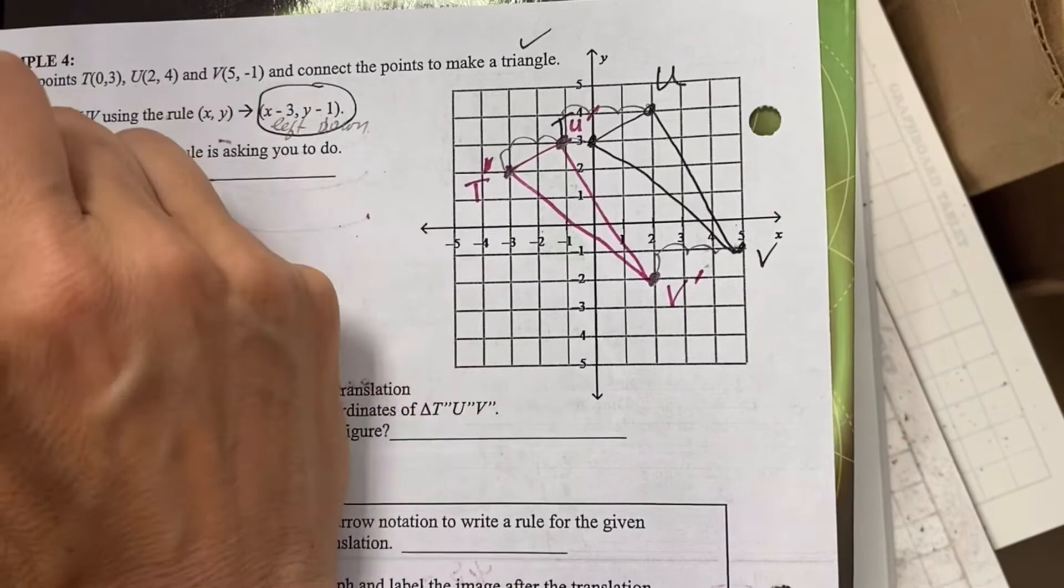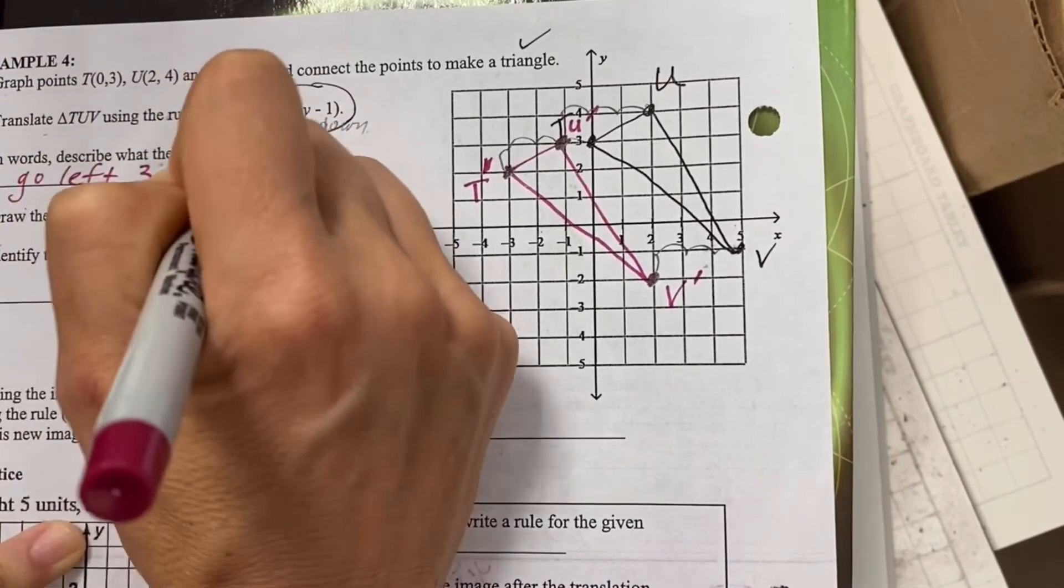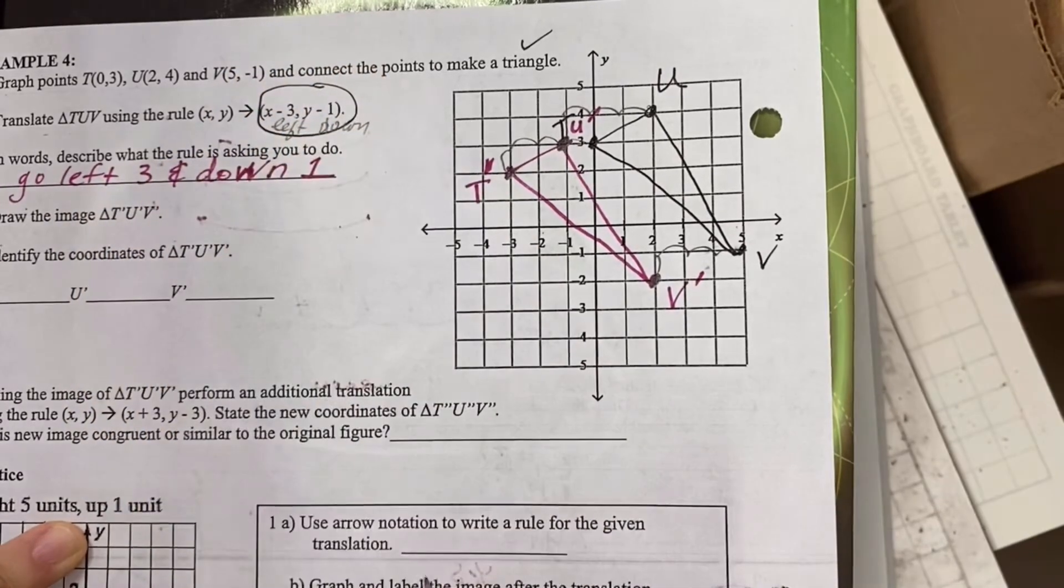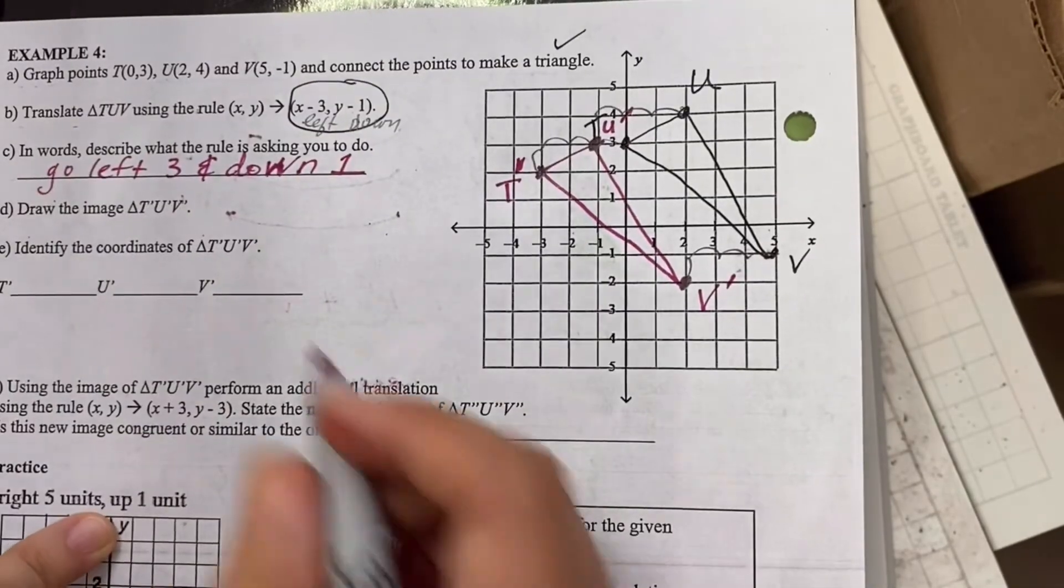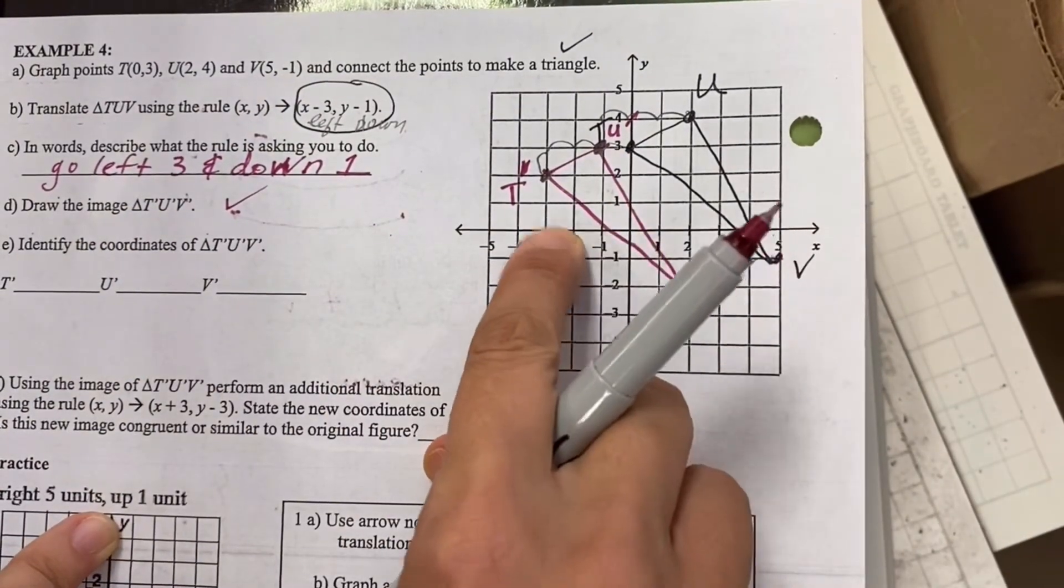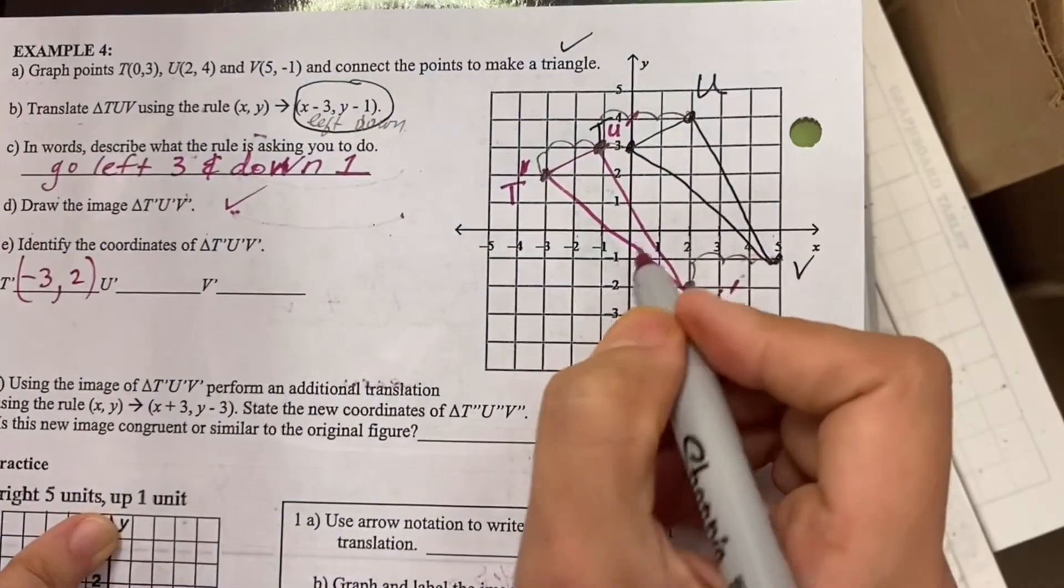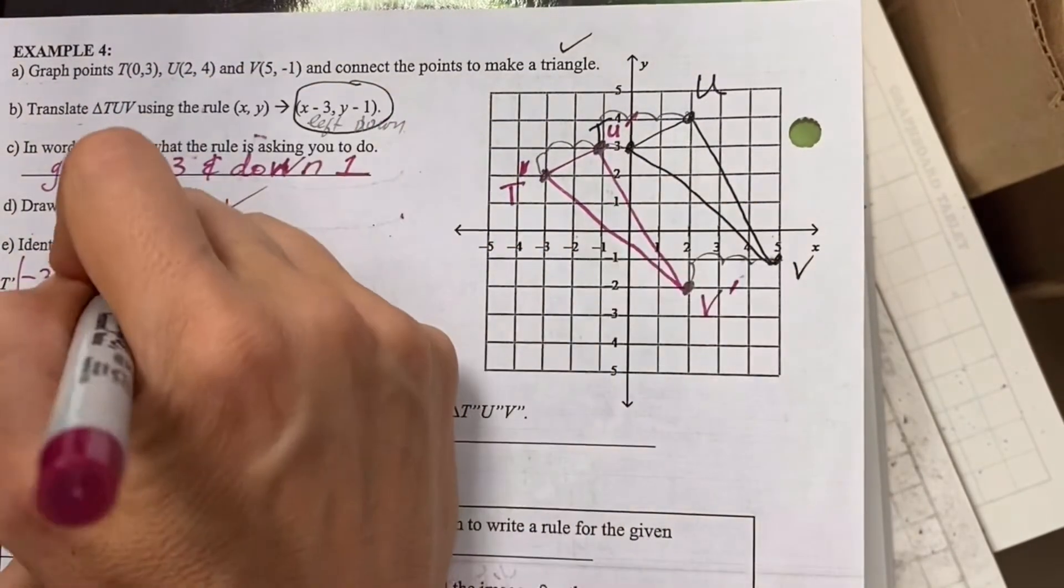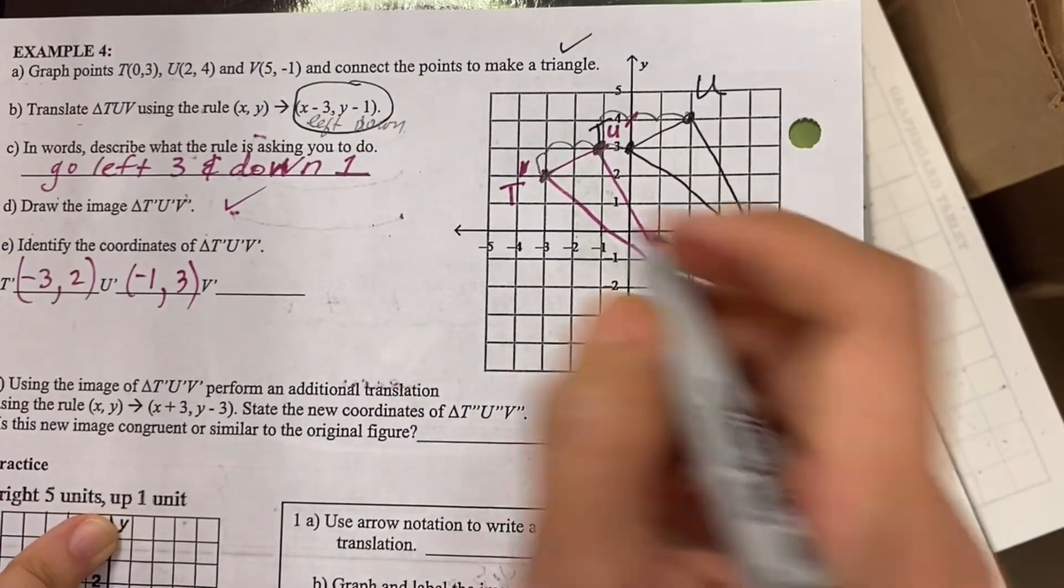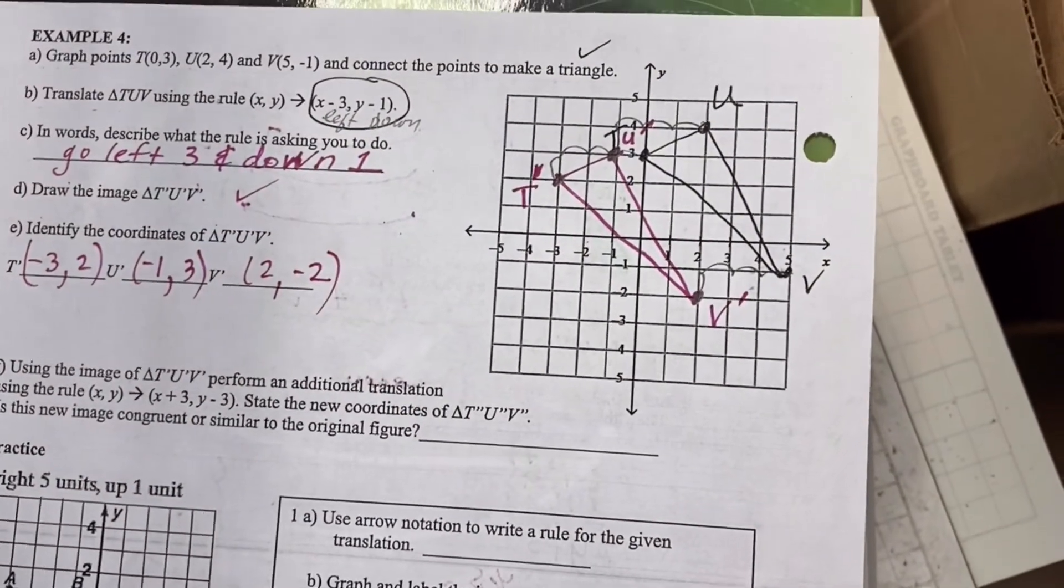In words, describe what the rule is asking you to do. Go left three and down one. Draw it. Done. Identify the coordinates. No problem. Negative three, two. Negative one, three. Positive two, negative two. Check out the next video for the rest of the worksheet.